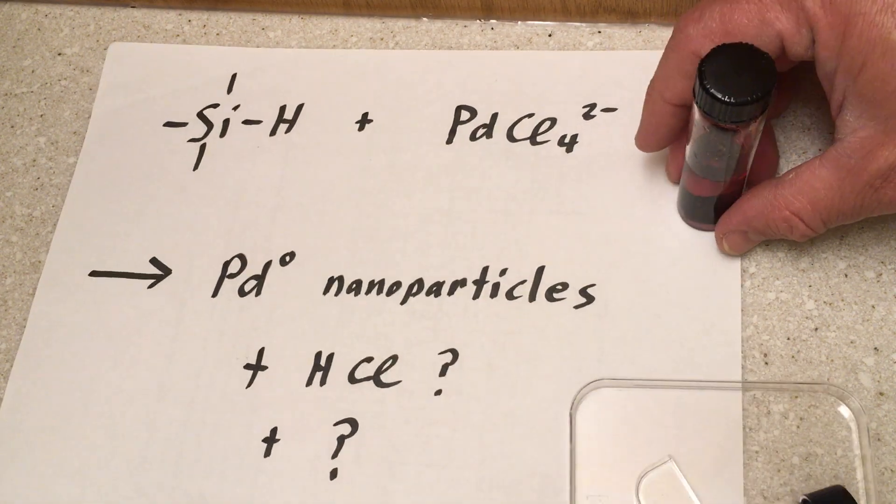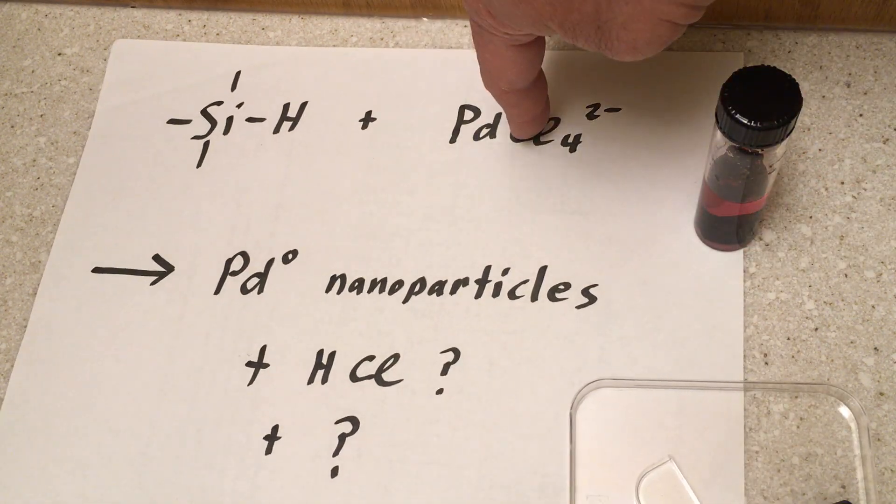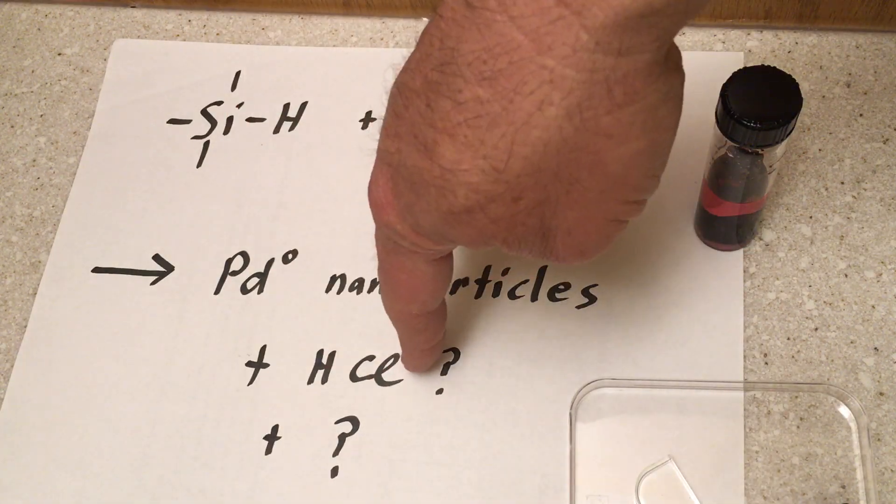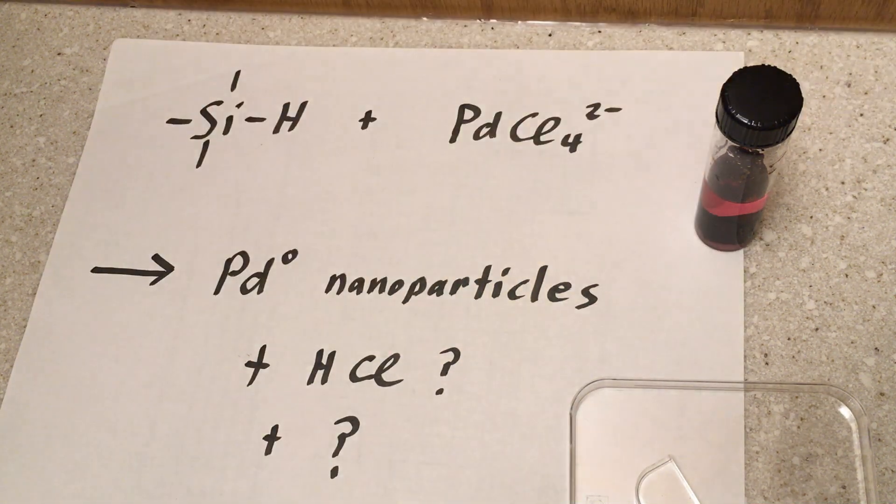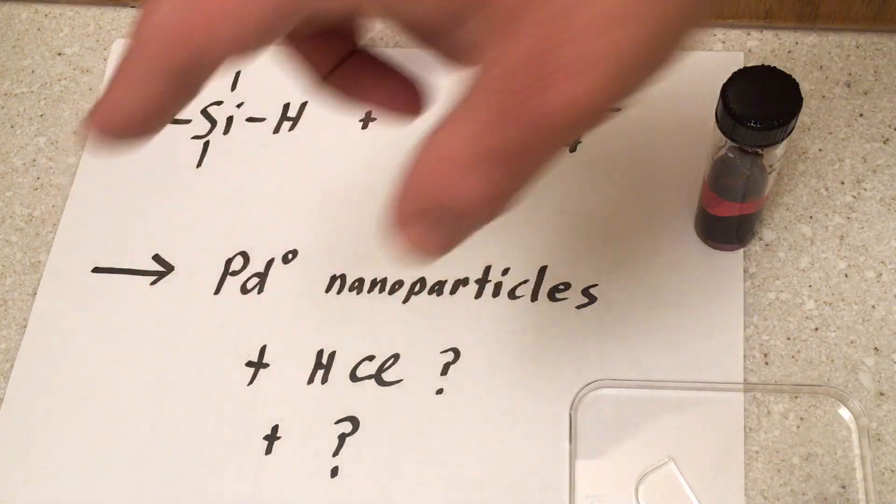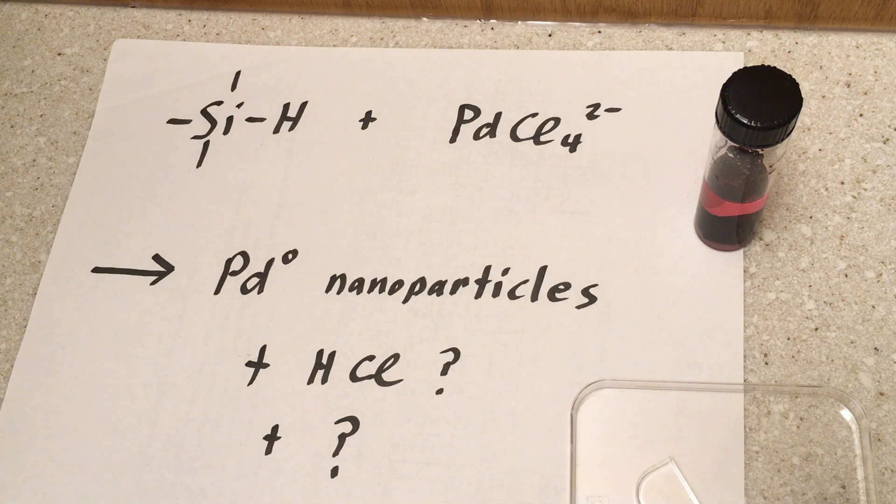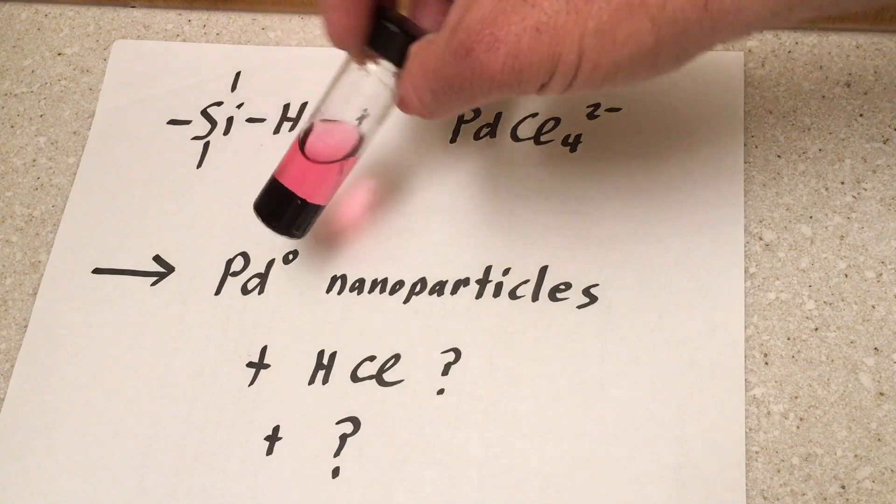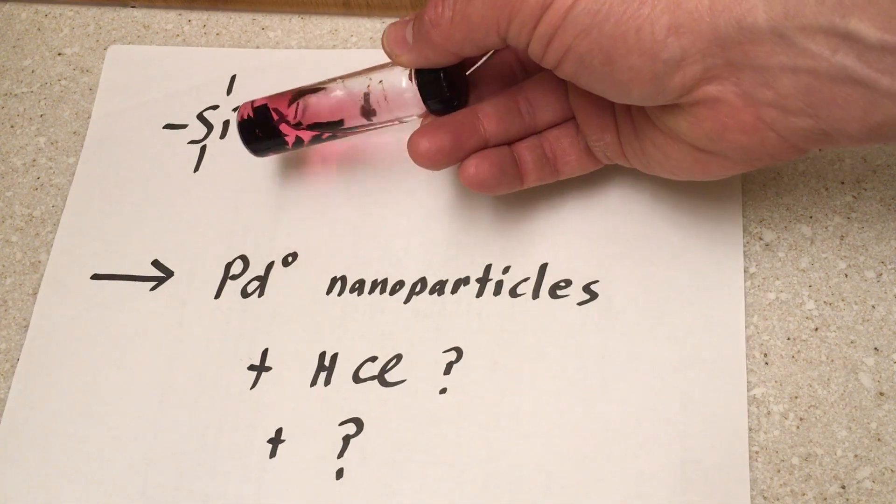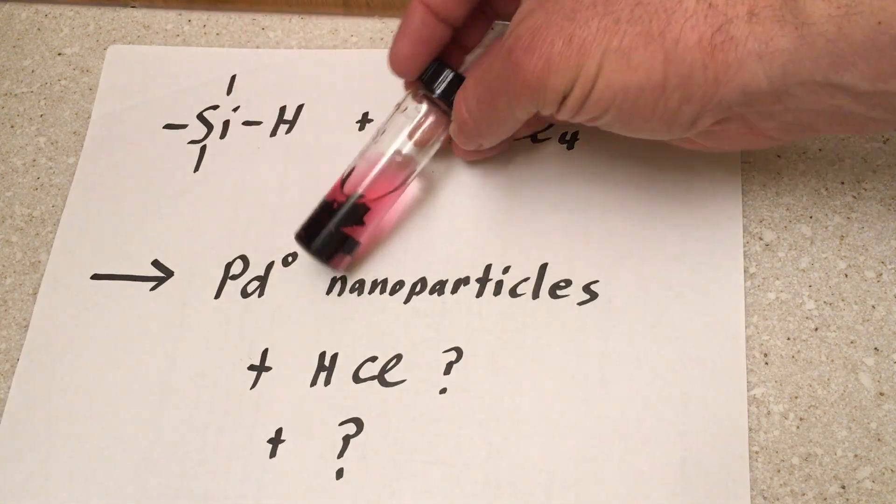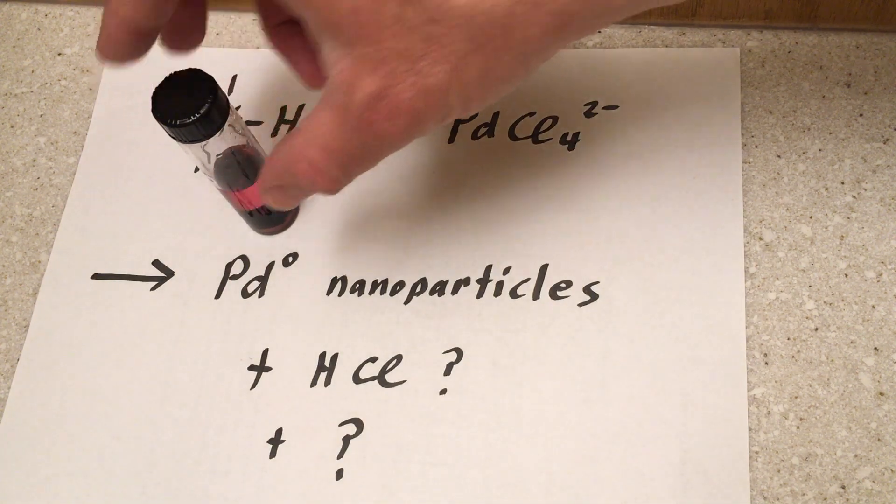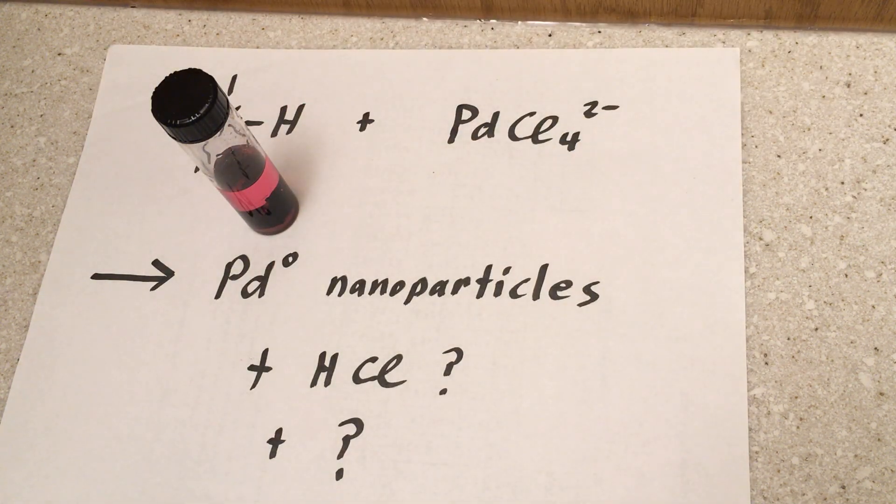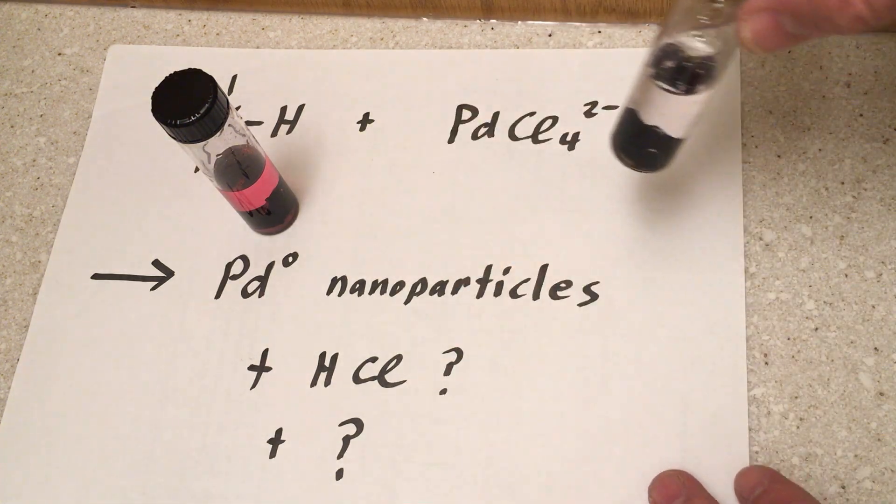We think what's happening is this reaction takes place as some of the chlorine combines with hydrogen to make hydrogen chloride or hydrochloric acid. And some of the rest of the chemistry I haven't quite worked out yet. But you can see this little vial here has a bit of a red dye. We call that methyl red.